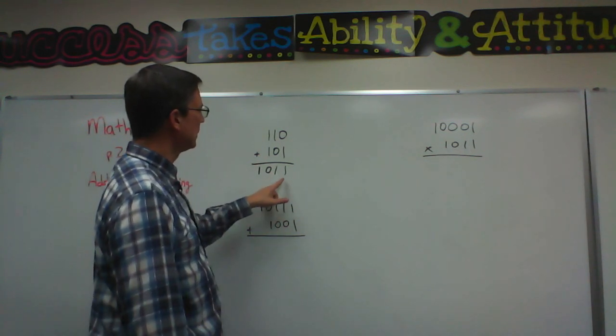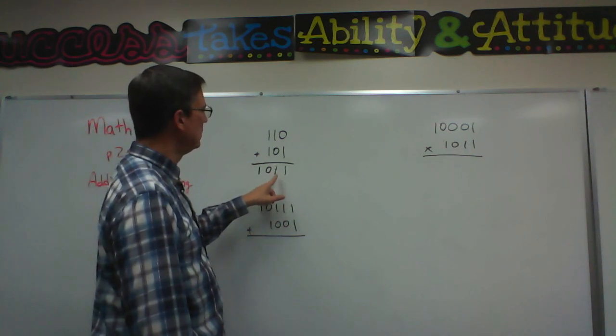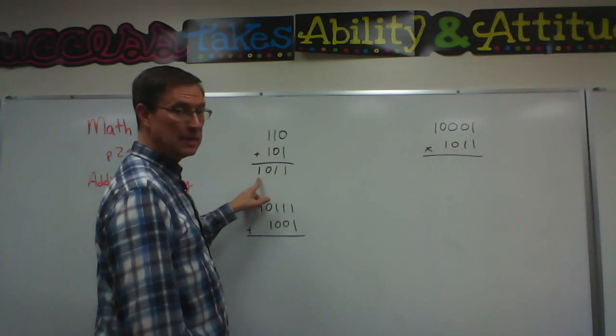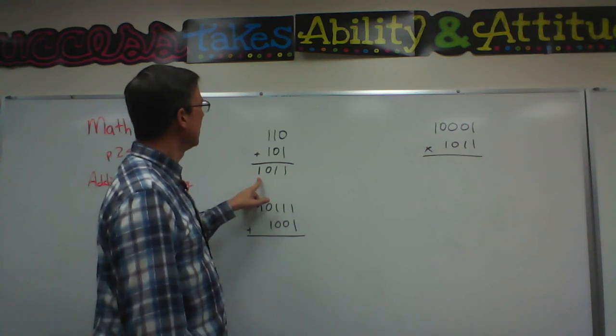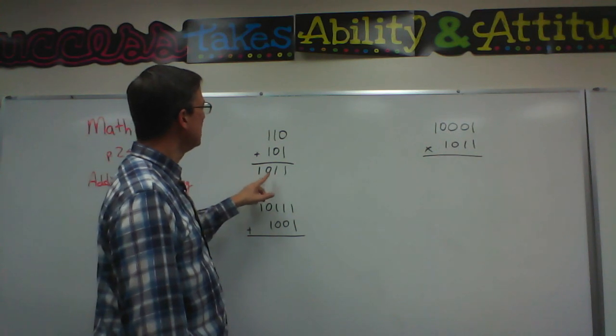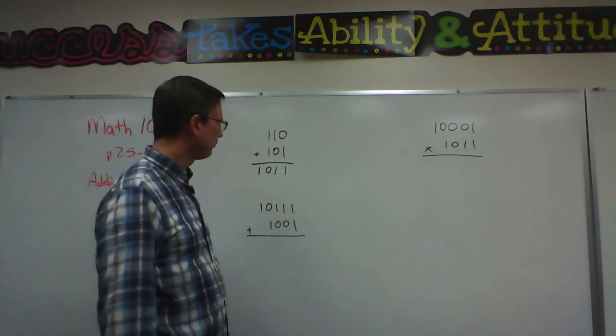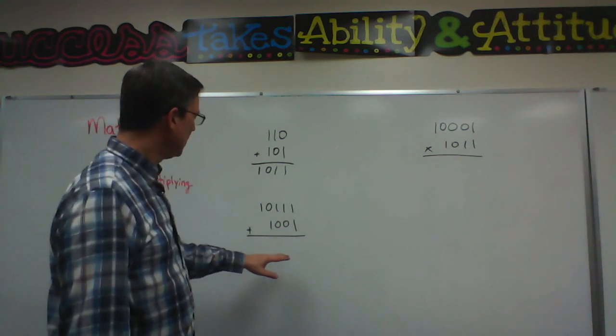If we were to go back and think about the place value, this would be 1, 2, 4, and 8. So that would actually add up to 8, 9, 10, 11. Let's look at this number.